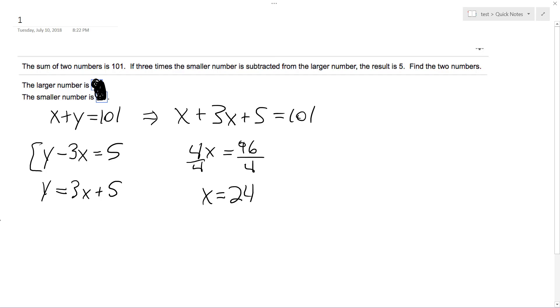If we substitute that back into x + y = 101, we get 24 + y = 101. Subtract 24, and we get y = 77.